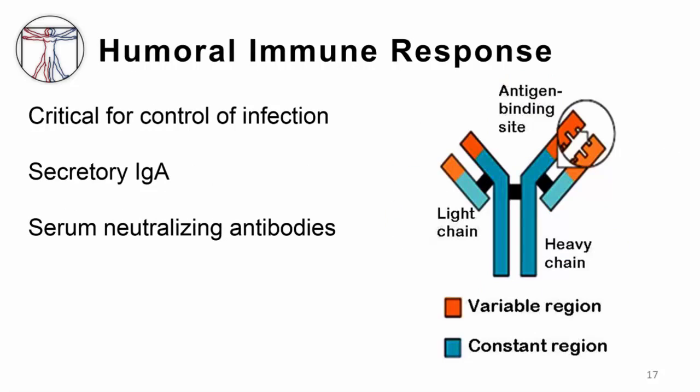The humoral immune response is critical for control of infection, as demonstrated by studies in people with immunodeficiencies and through vaccine trials. Antibodies are important in two places: at the mucosal surface, primarily secretory IgA, which if present can stop infection; and in the serum, where antibodies inhibit circulating virus. These antibodies are present if you have been previously exposed to the virus, immunized, or they develop during the secondary viremia that occurs later in the course of infection.